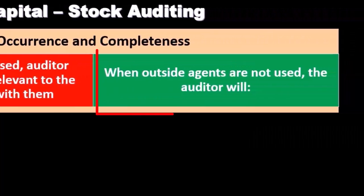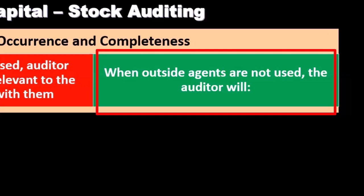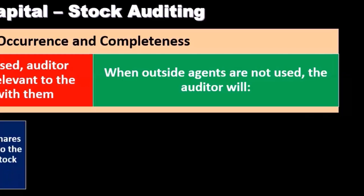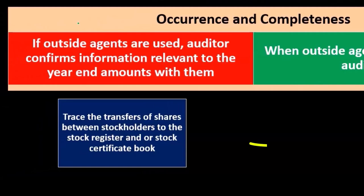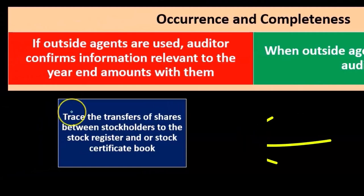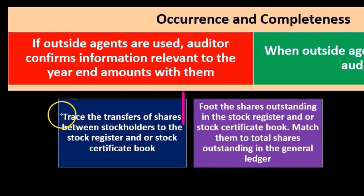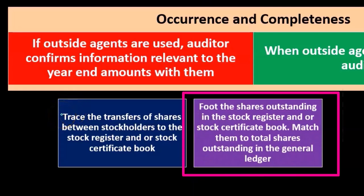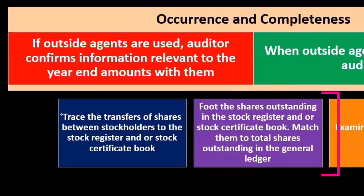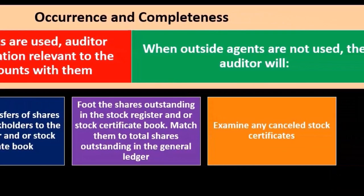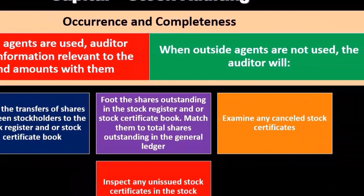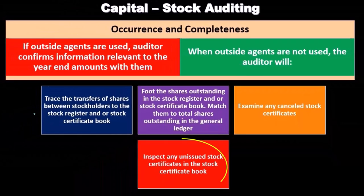When outside agents are not used, the auditor has to do something else. The auditor will trace the transaction of shares between the stockholders to the stock register and/or stock certificate book, foot the shares outstanding in the stock register and/or stock certificate book, match them to total shares outstanding in the general ledger, and examine any canceled certificates and inspect any unissued stock certificates in the stock certificate book.